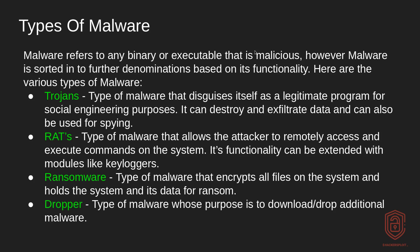Number one are Trojans. Trojans are a type of malware that disguise themselves as legitimate programs for the purpose of social engineering — getting a user to click on a program they believe is legitimate. It's very similar to binding a payload to an existing exe file, like a Chrome setup, and then exploiting the system through that. So the functionality of a Trojan includes data destruction and exfiltration, and we've seen variants that can also be used for spying.